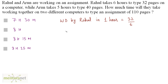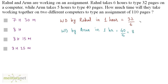Similarly, the total work done by Arun in 1 hour will be equal to his work done upon the number of hours taken — 40 by 5 — and that equals 8. We can also simplify 32 by 6: 2 times 16 is 32 and 2 times 3 is 6, so this is 16 by 3.